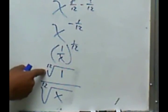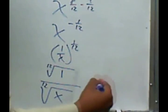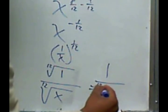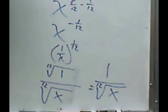And the 12th root of 1 is 1, so this becomes 1 over the 12th root of x.